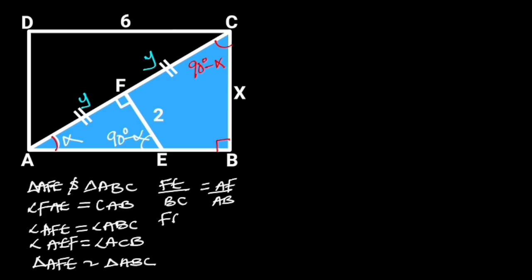FE is equal to 2, BC is X, AF is Y, and AB is 6.